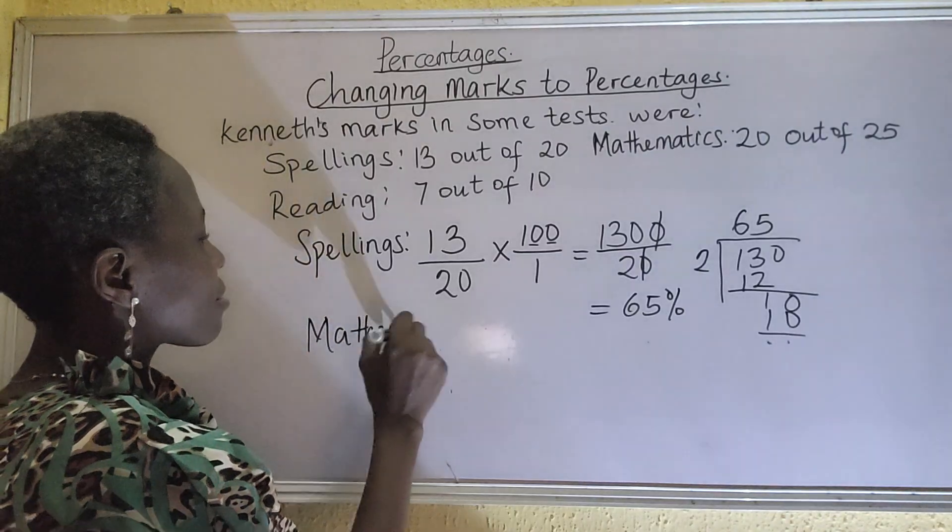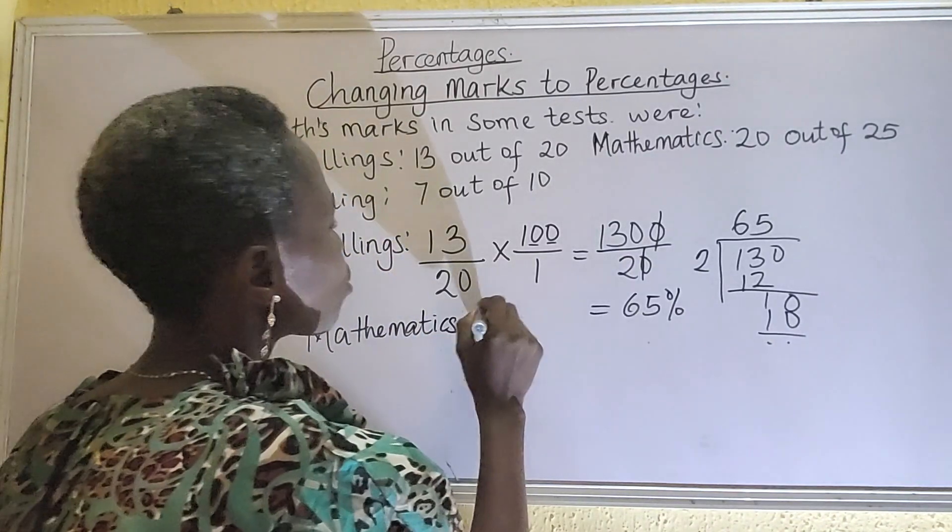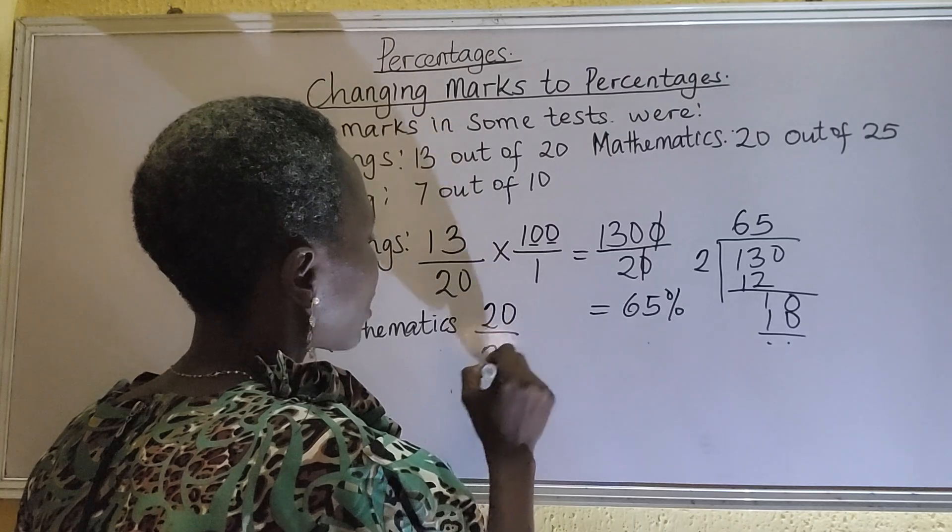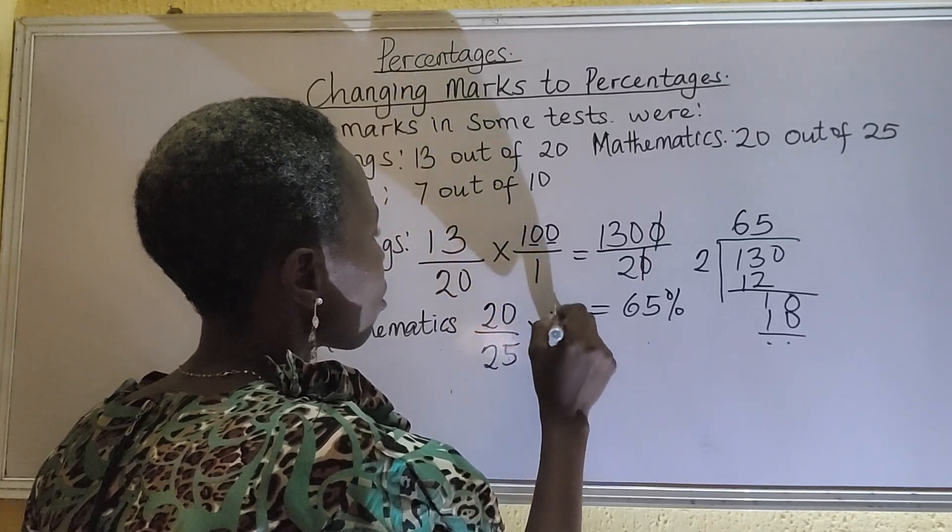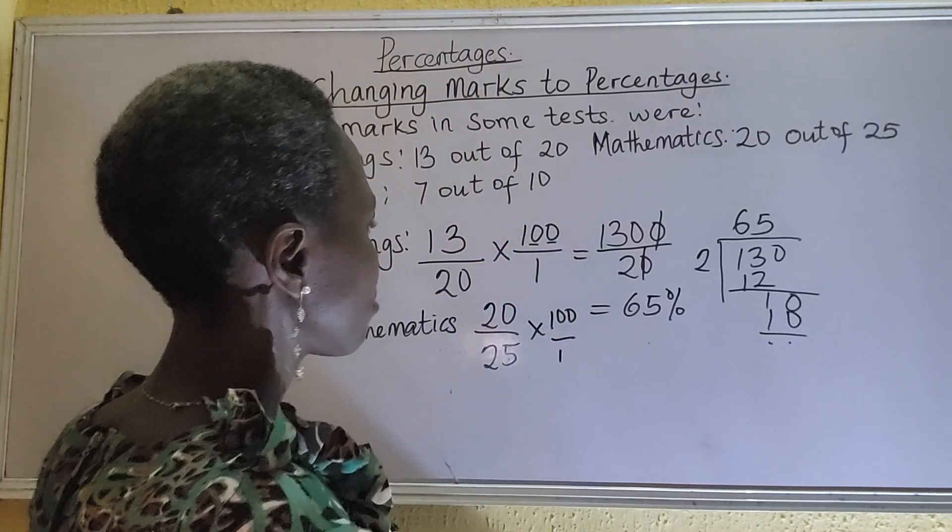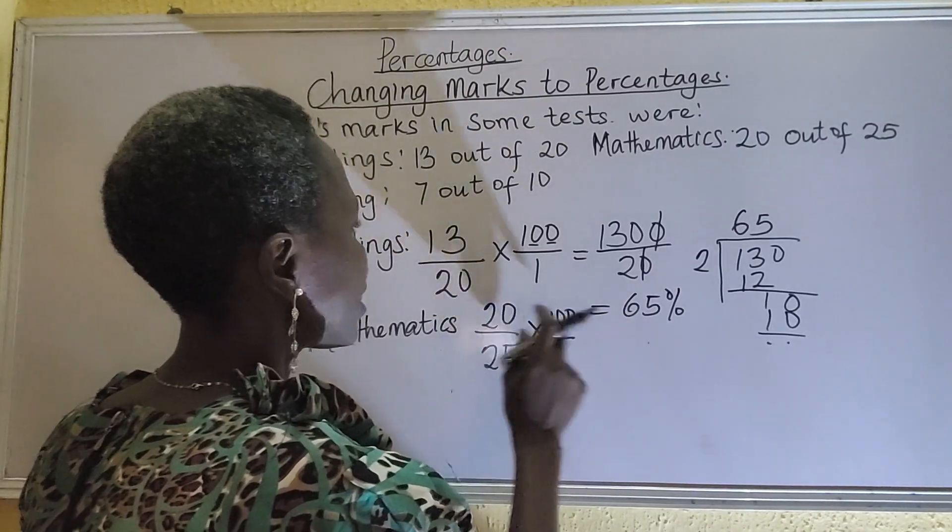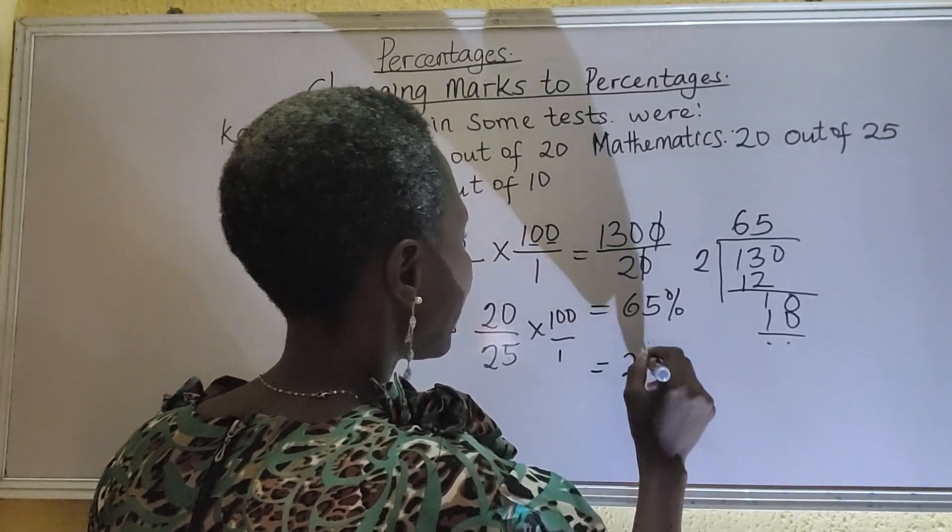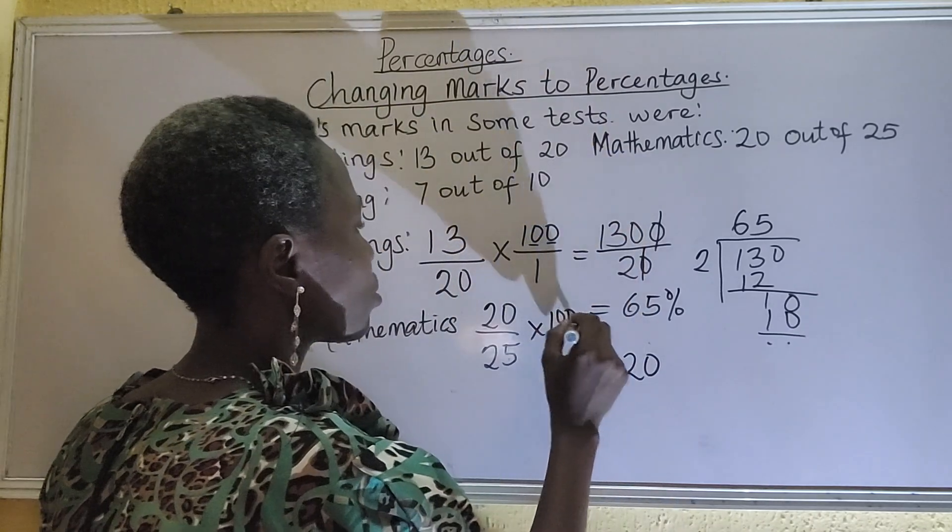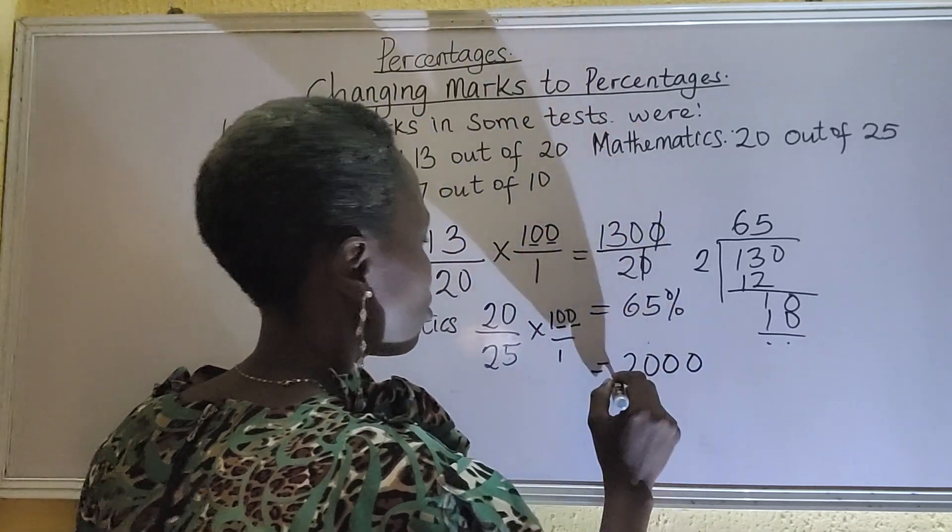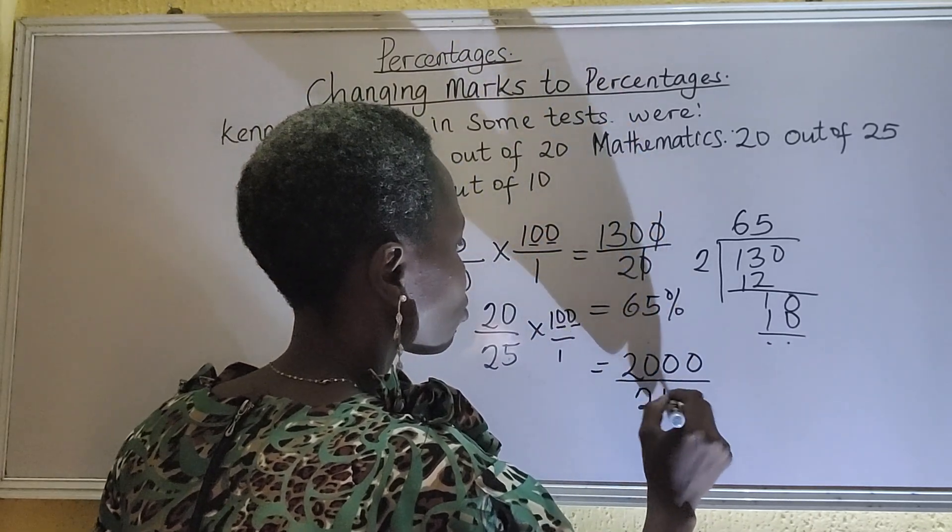Kenneth, what's your percentage? We have 20 out of 25 times 100 times 1 over 1. So we multiply out 20 times. Remember what I did? 20, and these two zeros, 1, 2. Over 25.